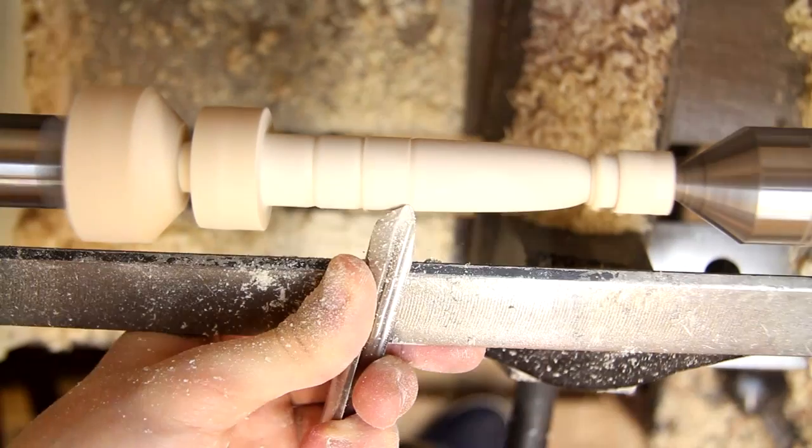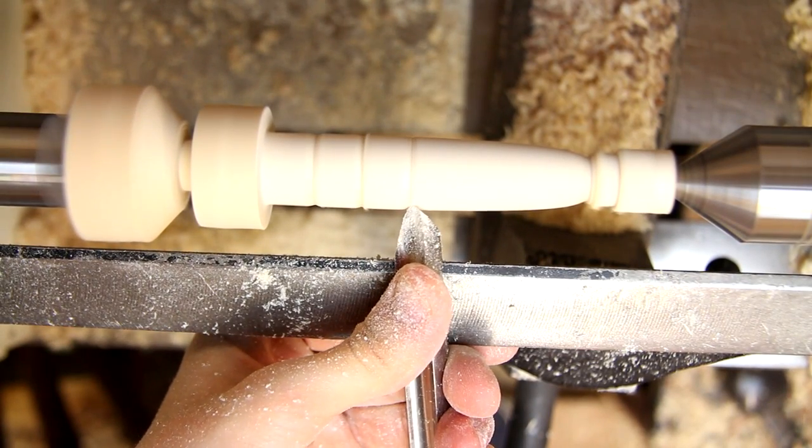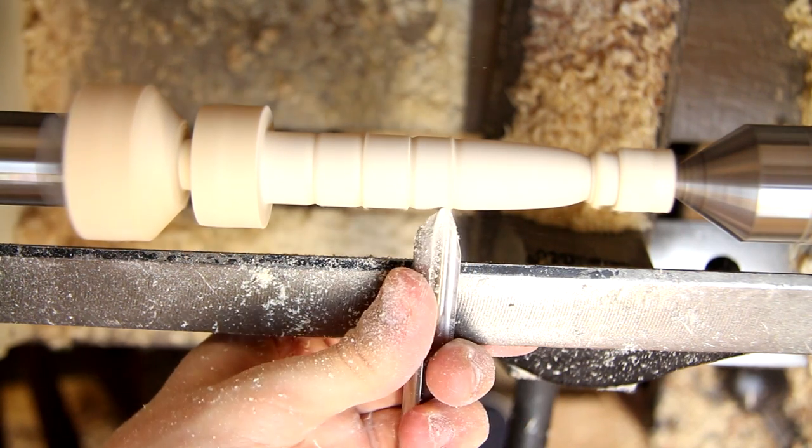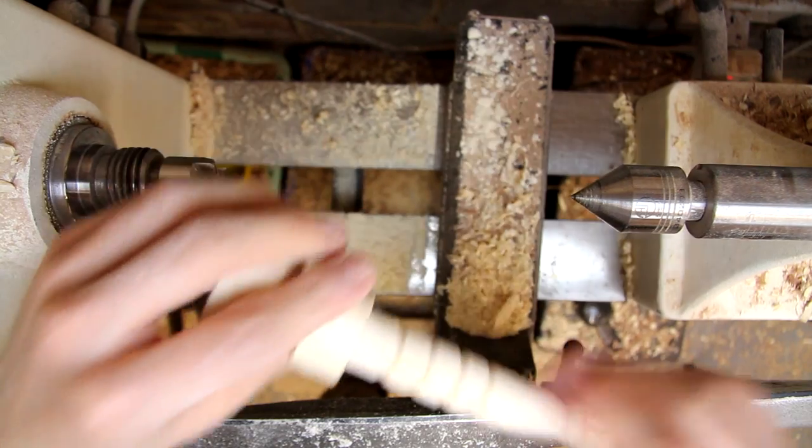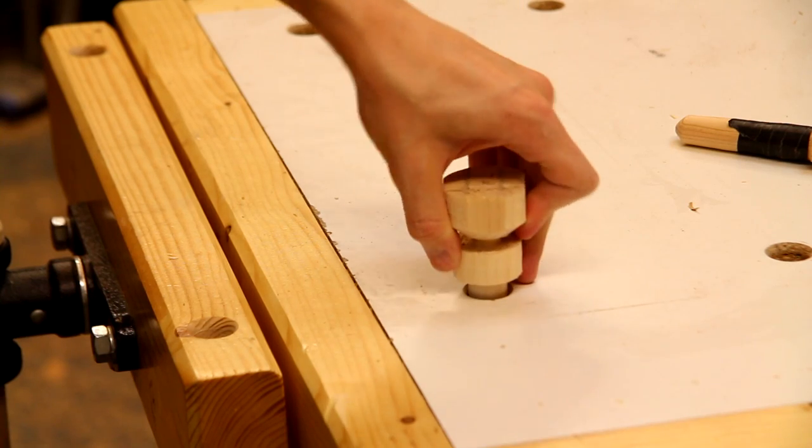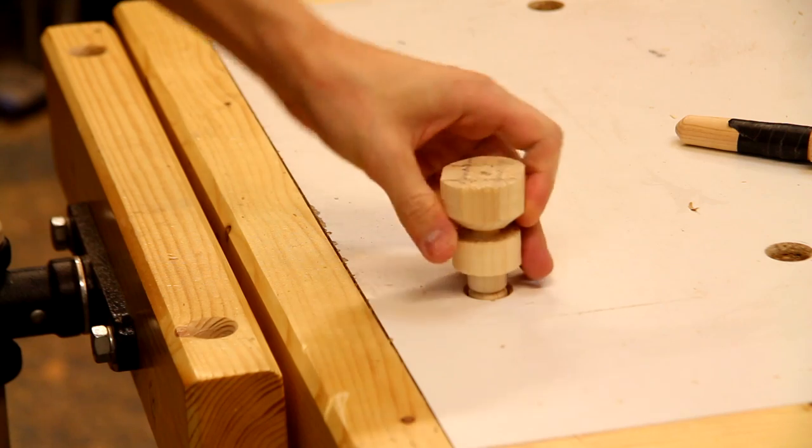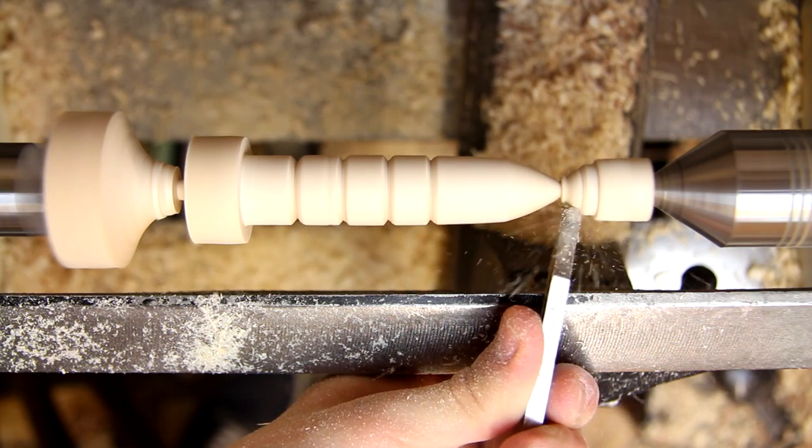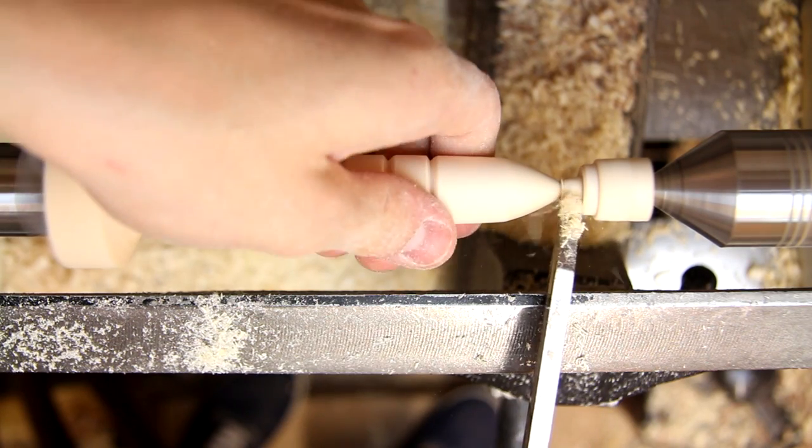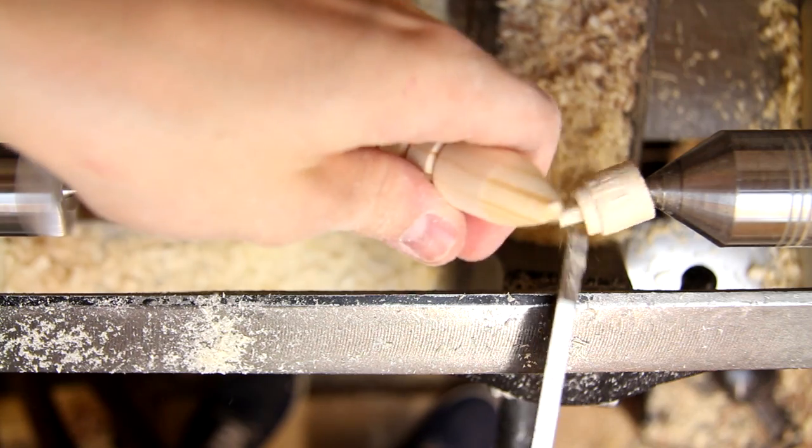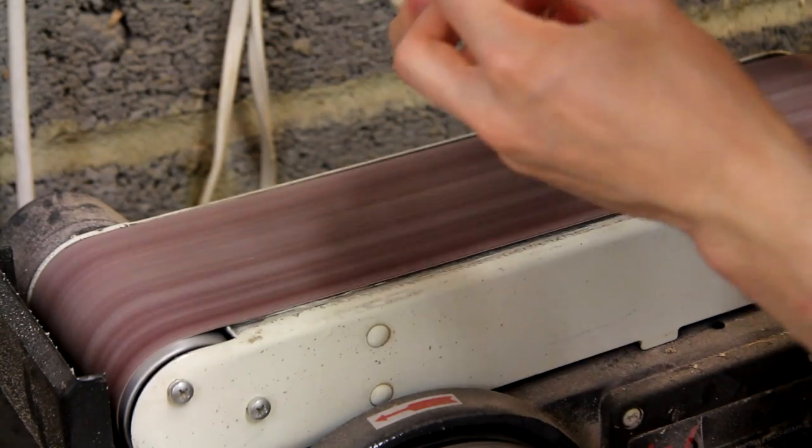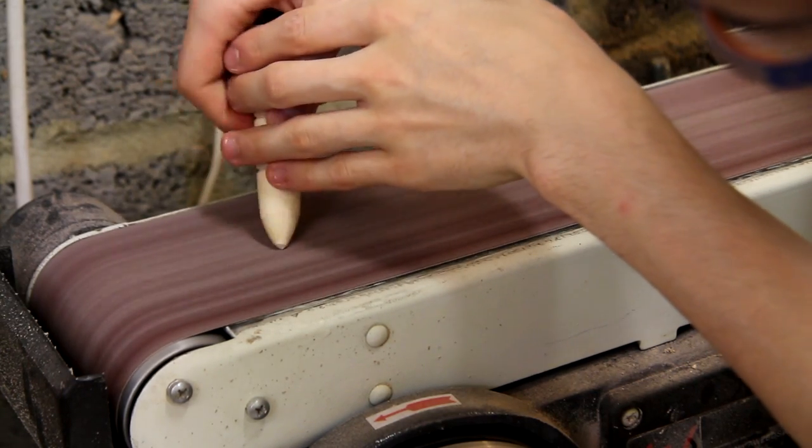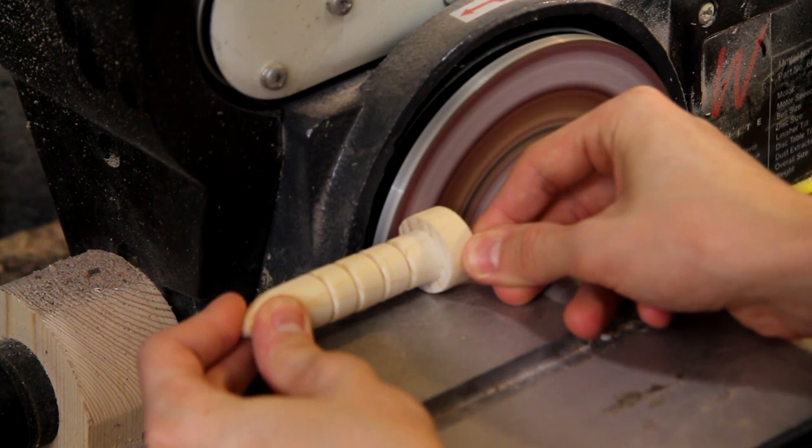I thought I would experiment a little bit with this new bench dog and so I'm turning a few grooves along its length to see if that helps with grip and setting the height of the bench dog. Now I'll quickly take the bench dog off the lathe to test the fit. This one appears to be okay but if it was a bit too tight you just need to sand it a little bit more.